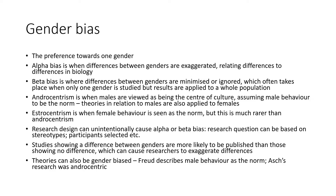Gender bias is the preference towards one gender. Alpha bias is when differences between genders are exaggerated, relating differences to biology. Beta bias is where differences between genders are minimized or ignored, which often takes place when only one gender is studied and the results are applied to a whole population. Androcentrism is when males are viewed as being the center of culture, assuming male behavior to be the norm, with theories relating to males also applied to females. Estrocentrism is when female behavior is seen as the norm, but this is much rarer than androcentrism.